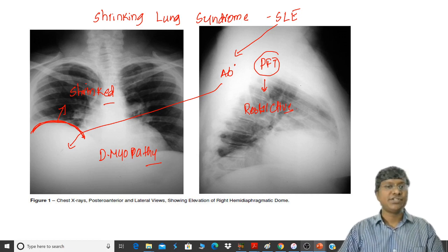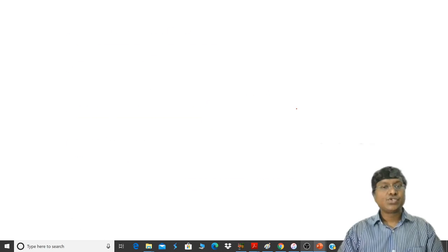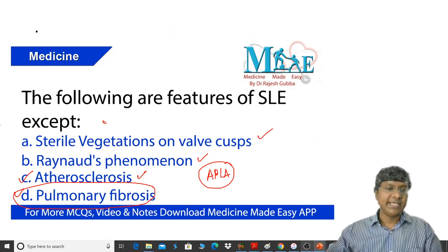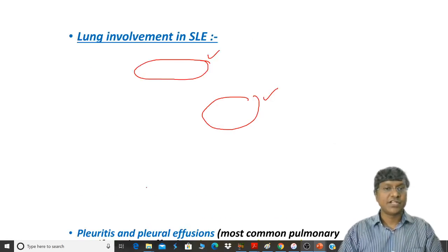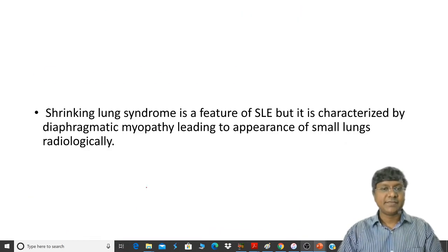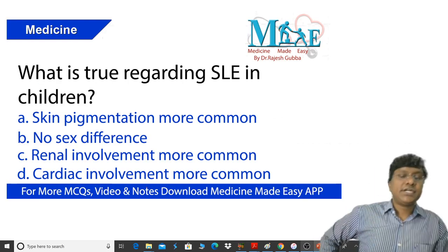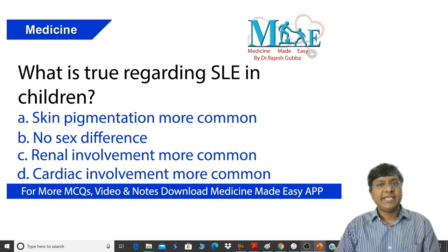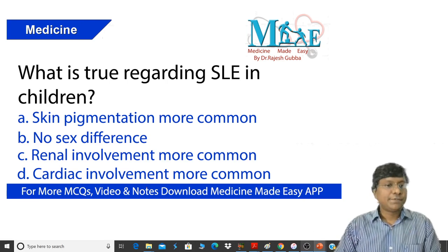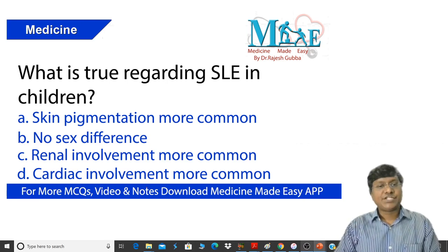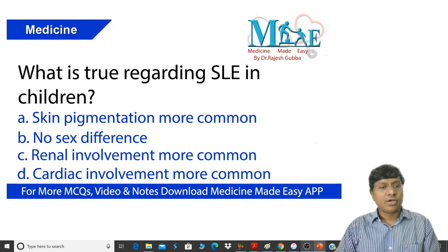This is one of the rare complications in patients with SLE. So pulmonary fibrosis is not a feature of systemic lupus erythematosus. Moving to the next question: what is true regarding SLE in children? The options are — skin pigmentation is more common, there is no gender difference, renal involvement is more common, and cardiac involvement is more common.